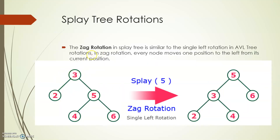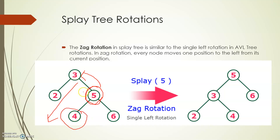The zag rotation is similar to the left rotation of an AVL tree. Suppose you want to move node 5 to position 3. Node 3 comes down and node 5 moves up. Since node 3 comes down, node 4 becomes the right child of node 3. This is how a zag rotation is performed.